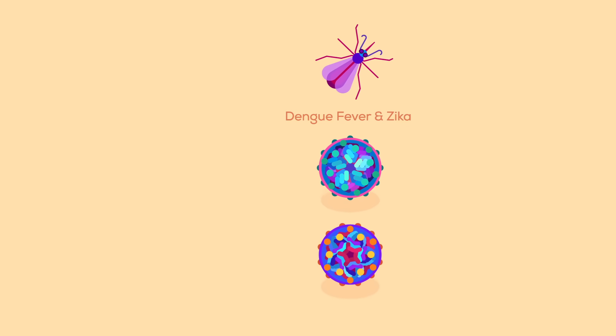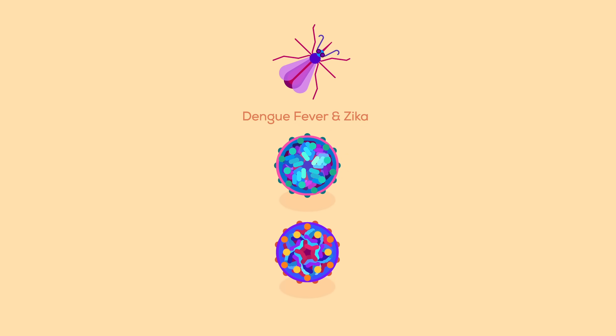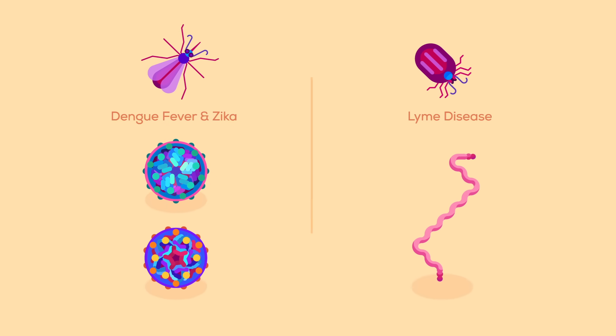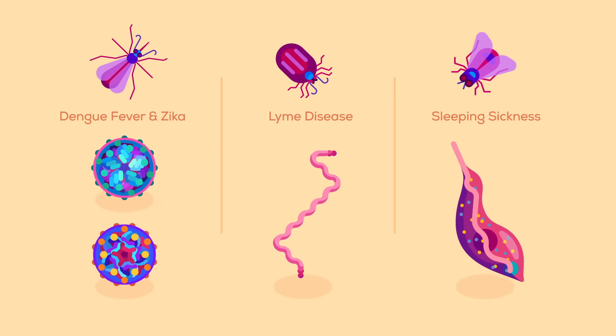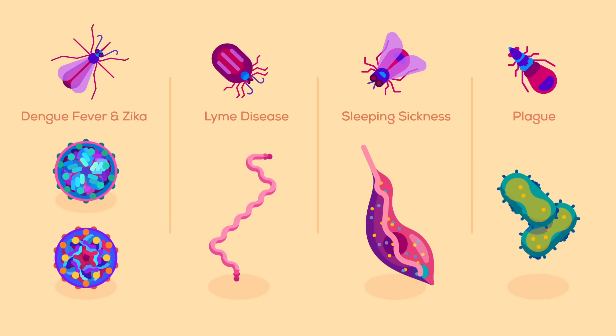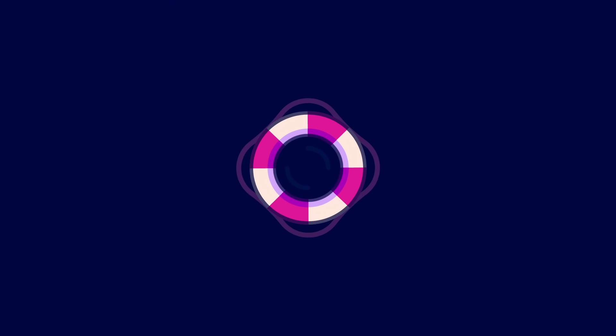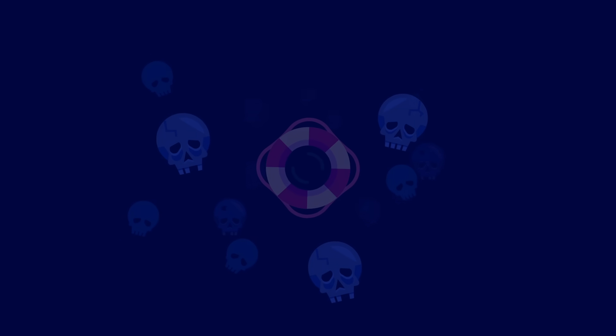Malaria might just be the beginning. Different mosquitoes also carry dengue fever and Zika. Ticks transmit Lyme disease. Flies transmit sleeping sickness. Fleas transmit the plague. We could save millions of lives and prevent suffering on an unbelievable scale.